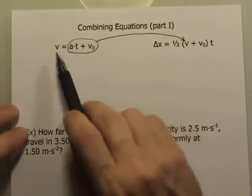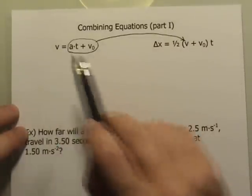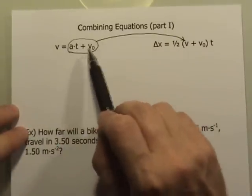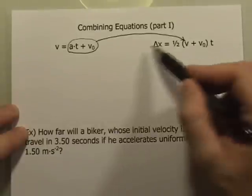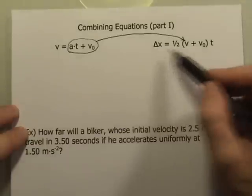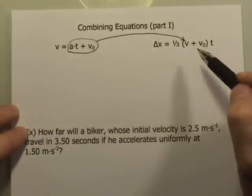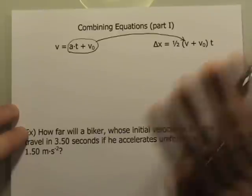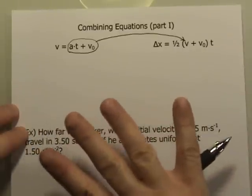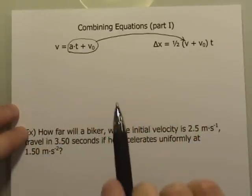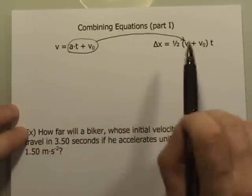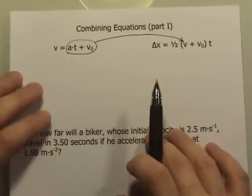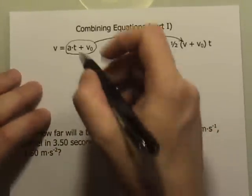I will have eliminated v, because when I replace this v with at plus v-naught, you can see that the v in this equation will disappear. I'll have a new equation. It will also have four variables, but it will not have the final velocity. So let's take a look at how that looks.